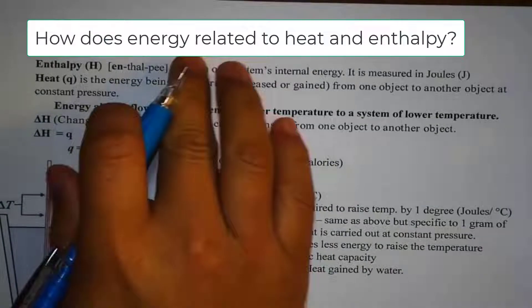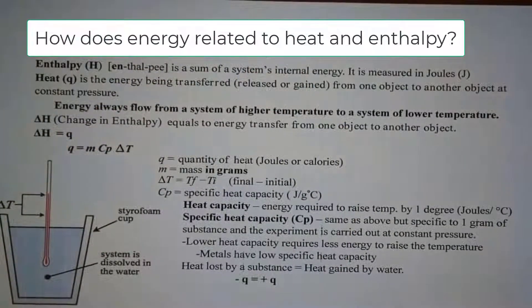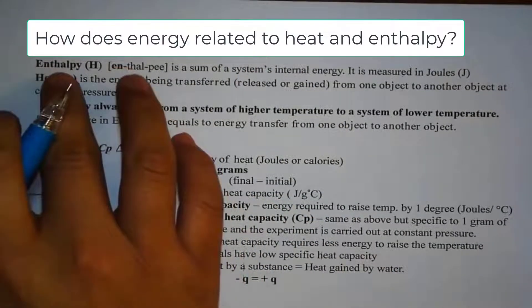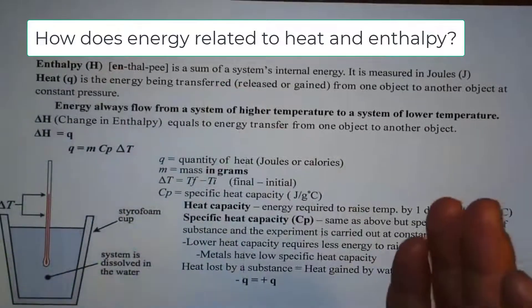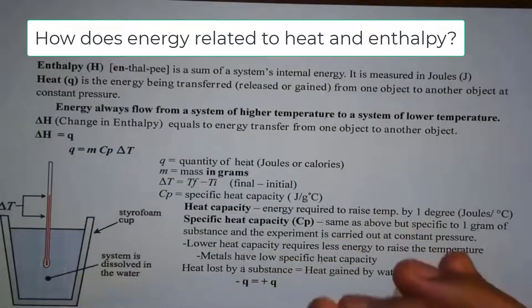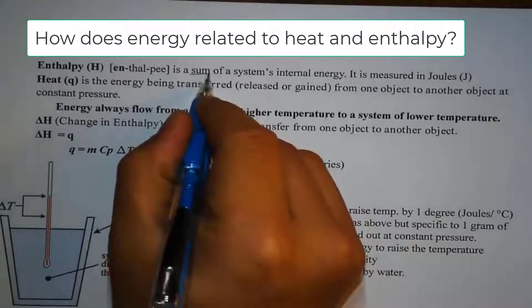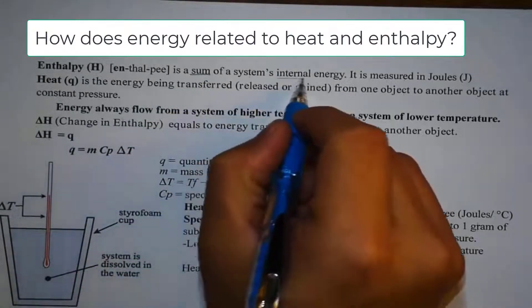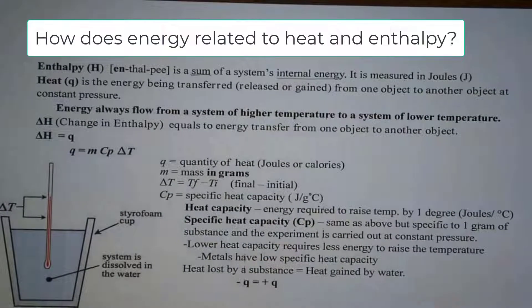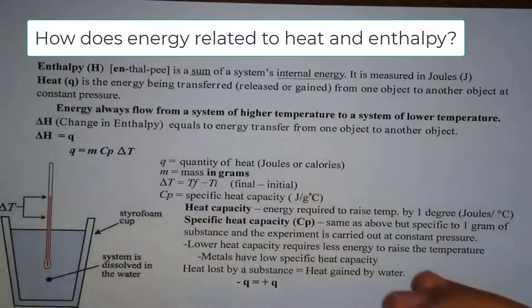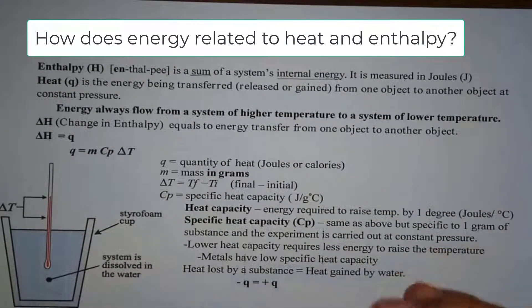So let's look at heat and enthalpy. First of all, enthalpy. Basically all substances have a certain enthalpy. What is it? It's basically the sum of the system's internal energy. So every substance or every matter has some sort of internal enthalpy.